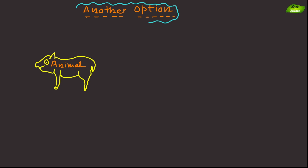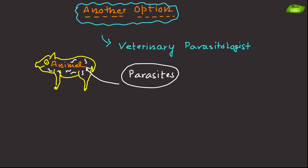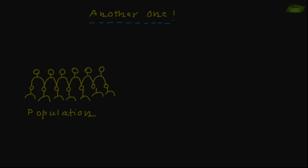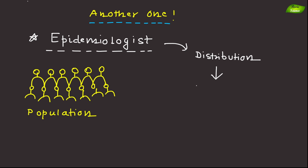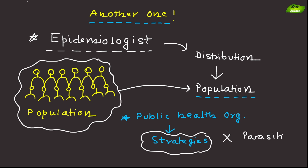Another option is veterinary parasitologist, who focuses on parasites that affect animals, working in veterinary clinics, research institutes, or agricultural settings to improve animal health and prevent parasitic diseases. You could also become an epidemiologist, studying the distribution and determinants of parasitic diseases in populations and working with public health organizations to develop strategies for controlling and preventing outbreaks of parasitic infections.